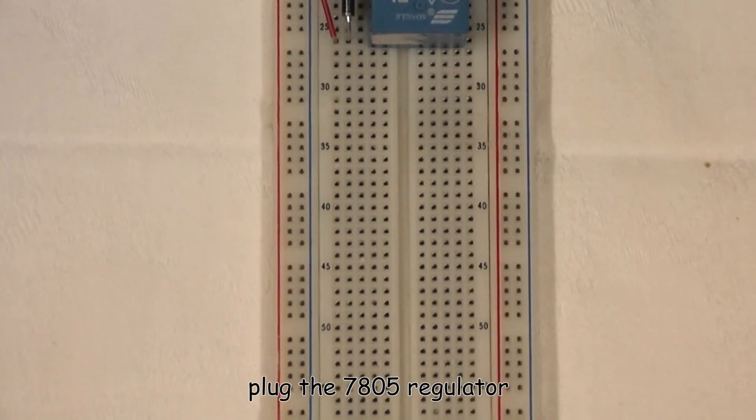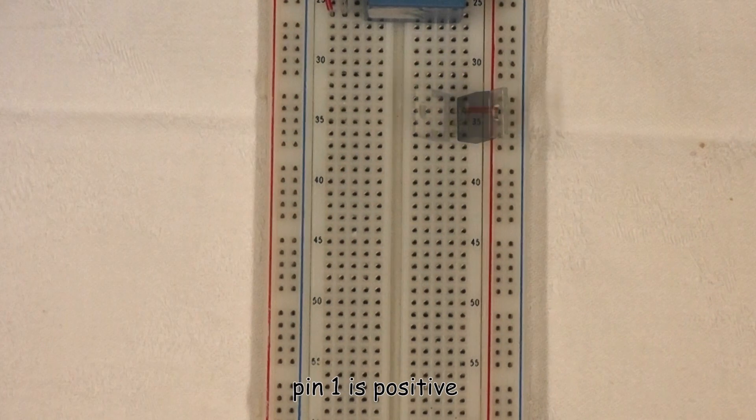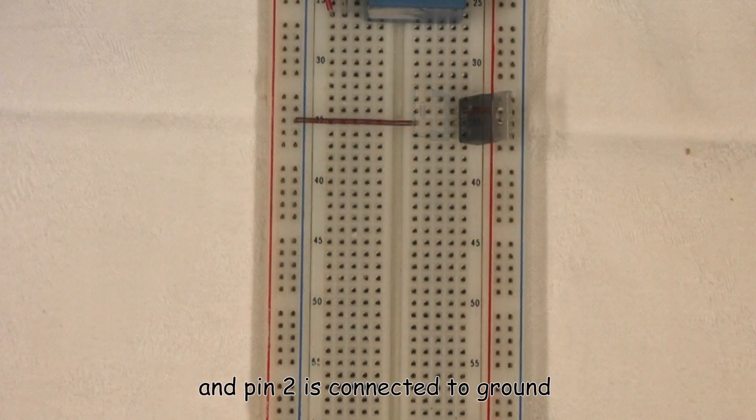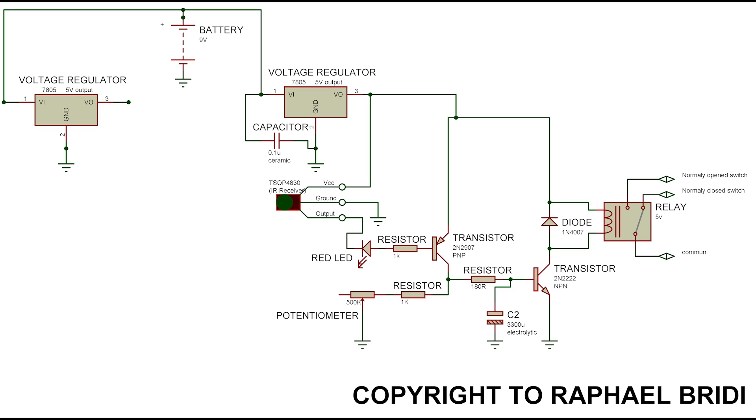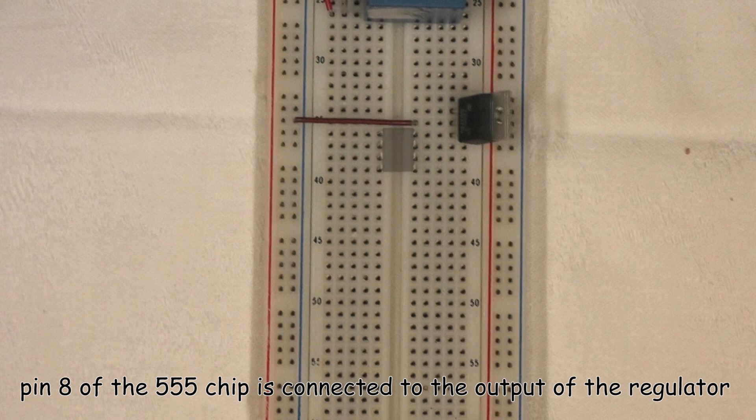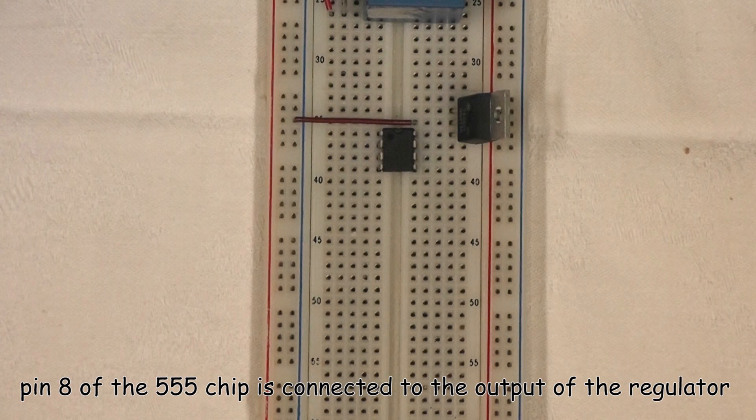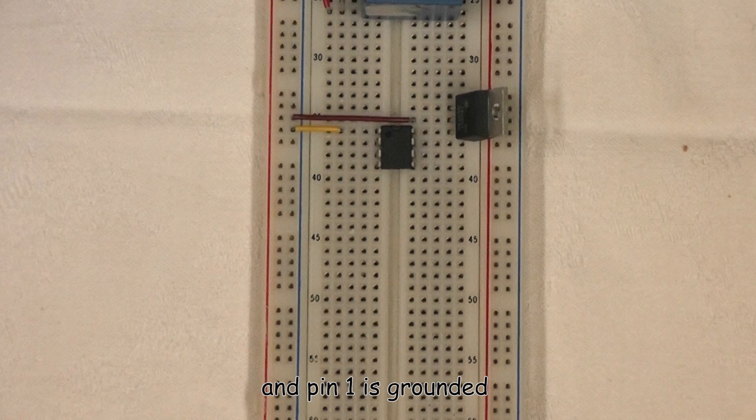Block the 7805 regulator. Pin 1 is positive and pin 2 is connected to ground. Pin 8 of the 555 is connected to the output of the regulator and pin 1 is grounded.